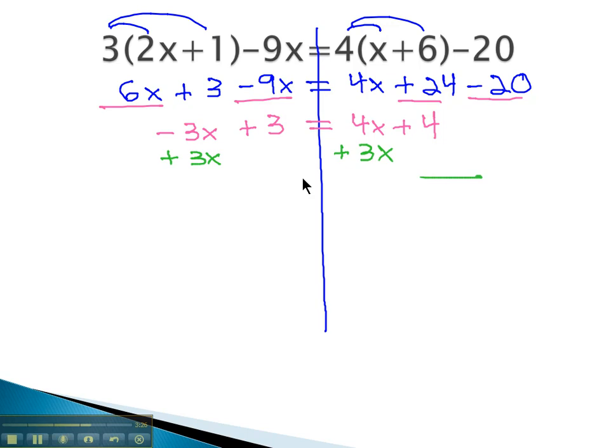and that's what we will do on both sides, lining up our like terms. The 3x's will subtract to 0, and we're left with 3 equals 4 plus 3, which is 7x plus 4.